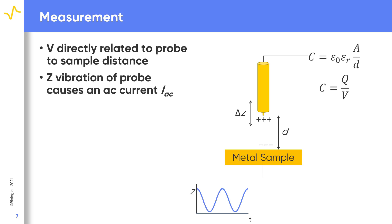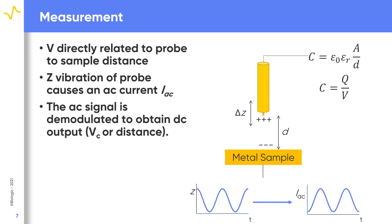In an SKP experiment, the probe is vibrated in Z perpendicular to the sample, changing the probe-to-sample distance. This in turn causes an AC current to form. In the Kelvin probe measurements, a DC signal — either contact potential difference for SKP, or probe-to-sample distance for topography measurements — is of interest. The AC signal is therefore demodulated to obtain the final DC signal of interest.